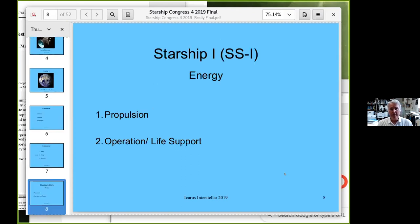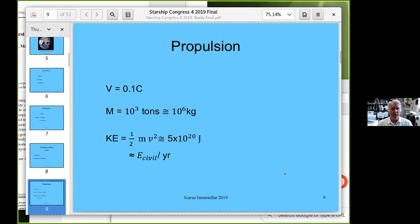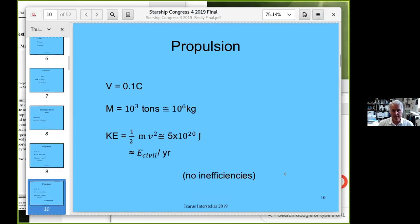For propulsion, let's say you're aiming for a velocity of about a tenth the speed of light, and your spacecraft is maybe a thousand tons, 10^6 kilograms. Kinetic energy at a tenth the speed of light is 5×10^20 joules, which is roughly the energy used by civilization over a year's period. So to get a small object to even a tenth the speed of light would be prohibitive, at least currently. And this assumes no inefficiencies in your propulsion.